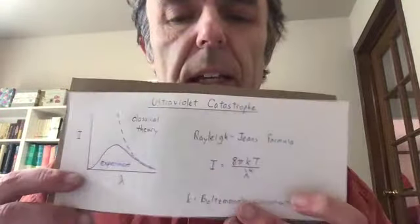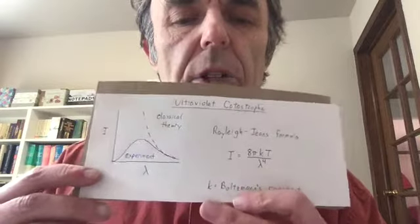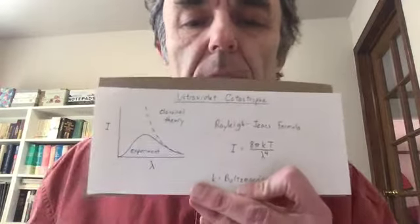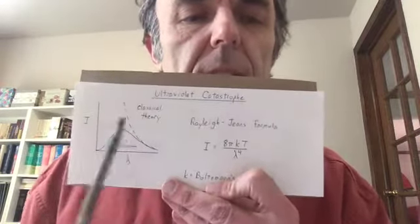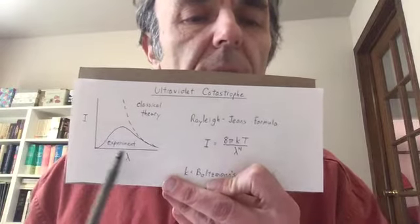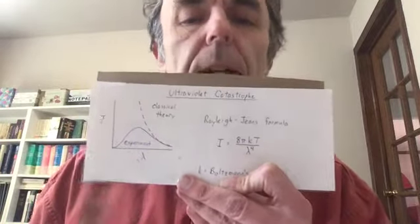Remember blackbody radiation was the amount of energy given off by a hot object, and we looked at the intensity given off as a function of the wavelength, looking across the electromagnetic spectrum.